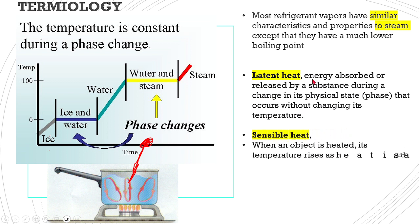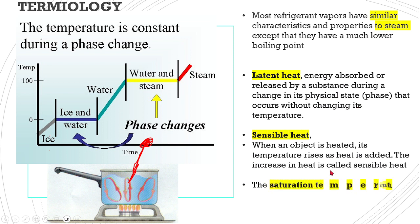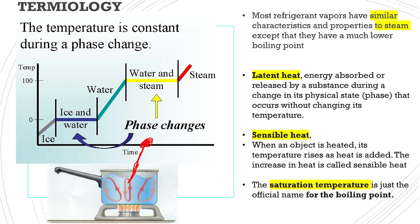Latent heat is the energy absorbed or released by a substance during a change in its physical state. Sensible heat is when an object is heated and its temperature rises as heat is added. There are two phases: latent heat of fusion and latent heat of evaporation. At 100 degrees Celsius for water, we call it the boiling temperature or saturation temperature.